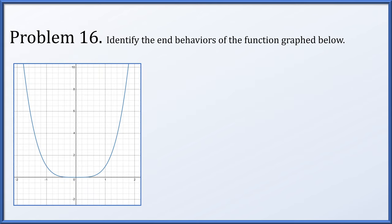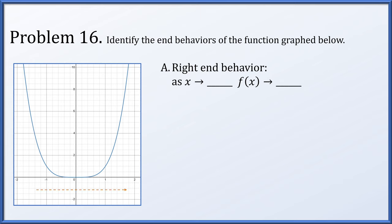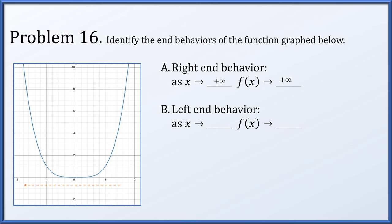In problem 16, identify the end behaviors of the function whose graph is given, assuming the graph continues as suggested. For the right end behavior, as x goes to plus infinity, the y coordinate goes up and up — f(x) goes to plus infinity. For the left end behavior, as x goes to minus infinity, a test point slid to the left also shows the y coordinate going up — so f(x) also goes to plus infinity in both directions.